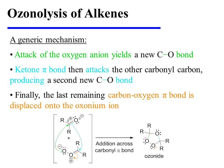Having reoriented the fragments in this fashion, they are now aligned with electronic complementarity. In other words, the anionic oxygen is now positioned near the partially positive carbonyl carbon, and that allows us to see the attack of the oxygen anion on the carbonyl carbon, which yields a new carbon-oxygen sigma bond. The ketone pi bond then attacks the other carbonyl carbon, producing a second new carbon-oxygen sigma bond. Finally, the last remaining carbon-oxygen pi bond is displaced onto the oxonium ion, thereby neutralizing its charge.